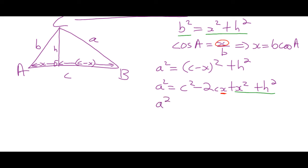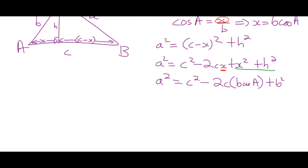We end up with A squared equals C squared minus 2C times B cos A plus B squared. So now we're just in terms of A, B, C, and angle A. We don't have X or H. We'll clean this up and write: A squared is equal to B squared plus C squared minus 2BC cos A. And that is the cosine law.